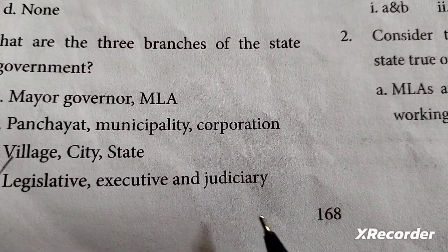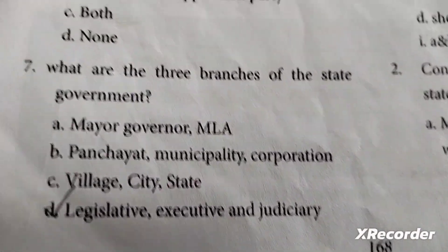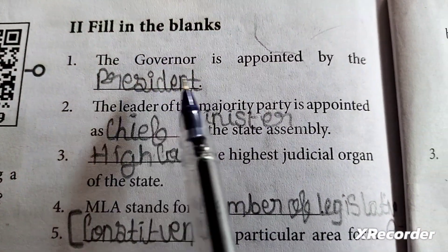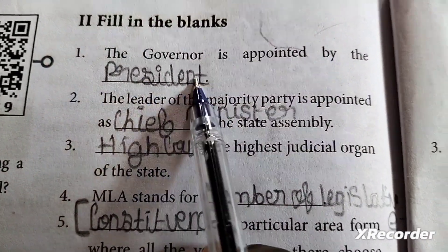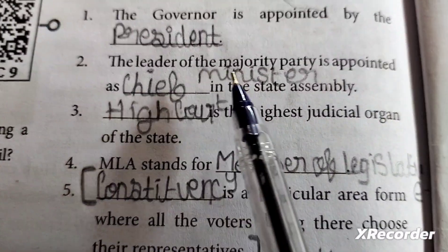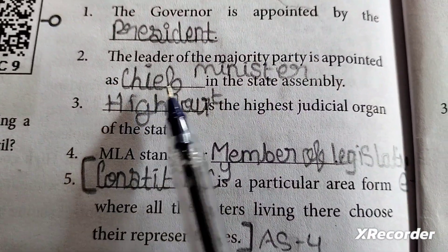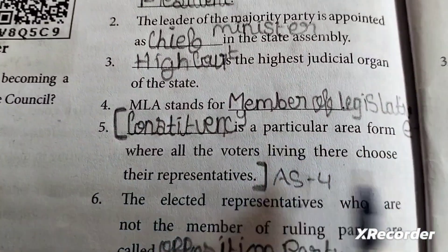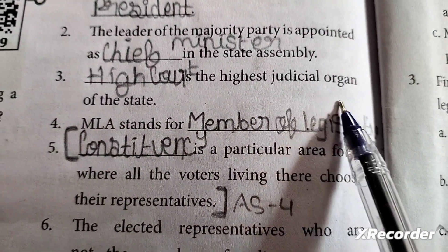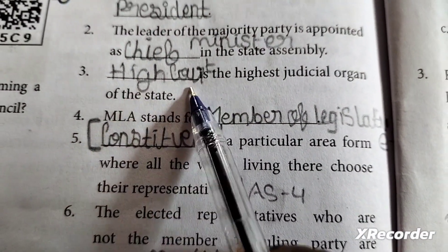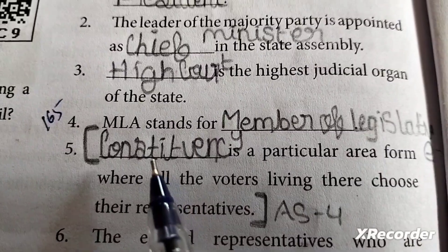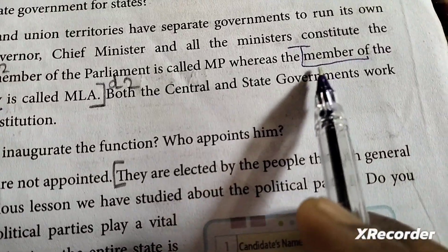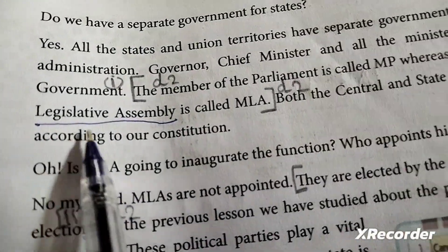The three organs of government are legislative, executive, and judiciary. Fill in the blanks. First question: The governor is appointed by the President. Second question: The leader of the majority party is appointed as chief minister in the state assembly. Third question: The High Court is the highest judicial organ of the state. Fourth: MLA stands for Member of the Legislative Assembly.